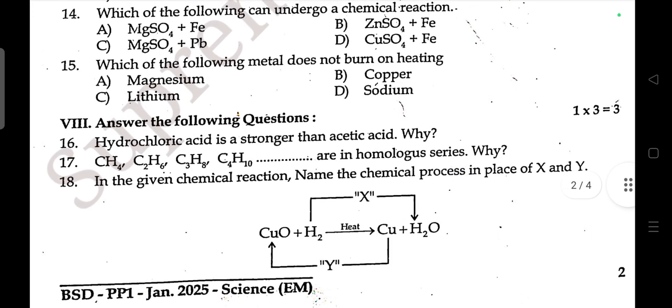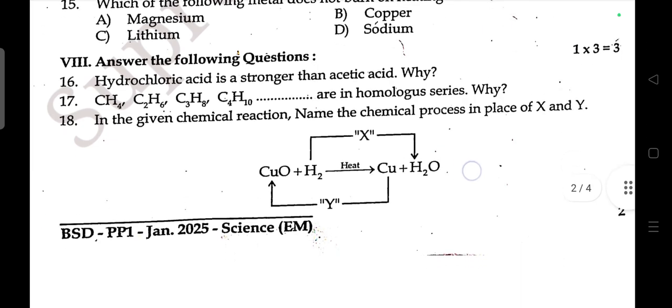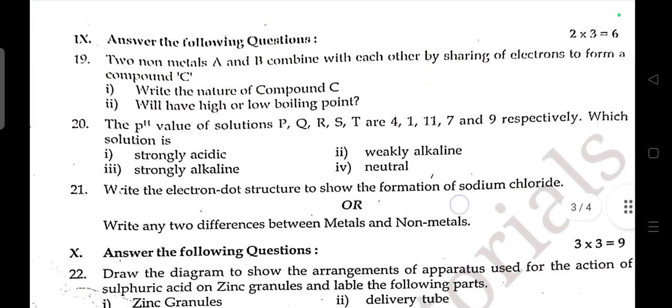Answer the following: Hydrochloric acid is stronger than acetic acid — why? Then: CH4, C2H6, C3H8, C4H10 are in a homologous series — why? In the given chemical reaction, name the chemical process at positions X and Y.